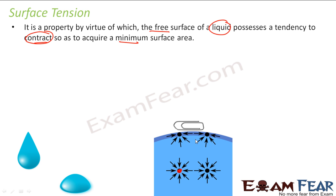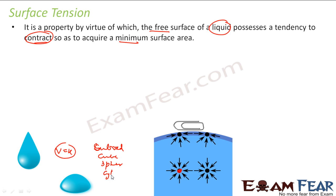Surface tension is the property of a liquid to contract to get the minimum surface area. That is the same reason why a droplet gets a spherical shape — because the droplet wants to have a minimum surface area. And if you calculate mathematically, the sphere is the one which has the minimum surface area for a given volume. If you compare cuboid, cube, sphere, or cylinder, the sphere has the minimum surface area — so the droplet gets a spherical shape to minimize surface area.